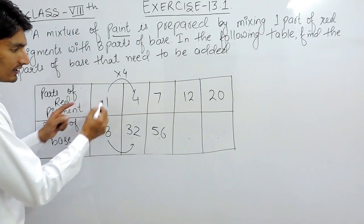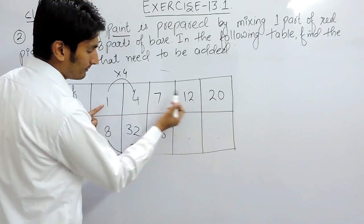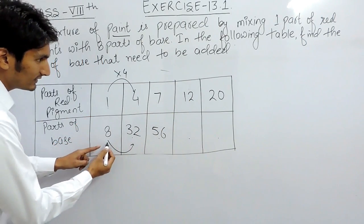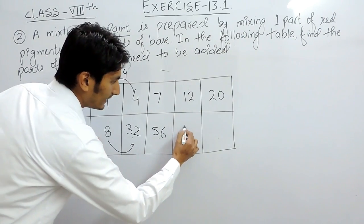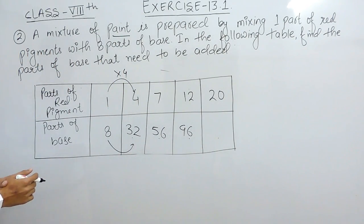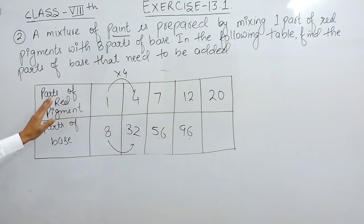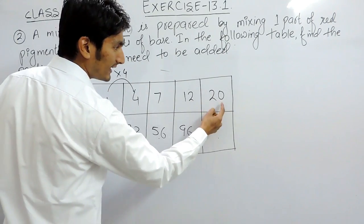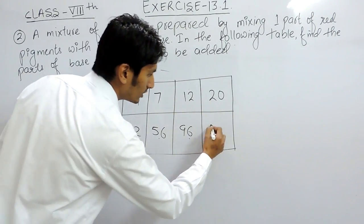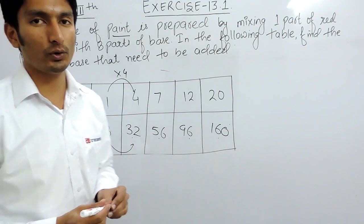Taking one as base again: the red pigment is increasing 12 times, so we multiply eight by 12 — this is also increased 12 times — so this will be 96. When we are adding 12 parts of red pigment we have to add 96 parts of base. And at the last, if the red pigment is increased 20 times, this must be 160. So this is how you can solve this second question.